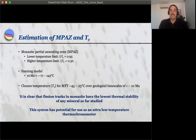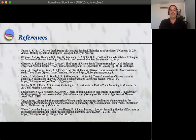To summarize, it is clear that fission tracks in monazite have the lowest thermal stability of any mineral so far studied, suggesting that this system has the potential for use as a new ultra-low temperature thermochronometer. Thank you.